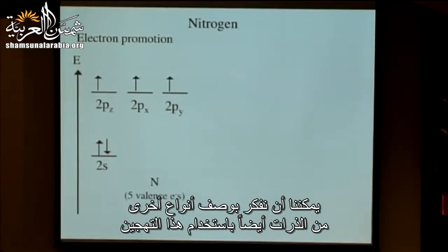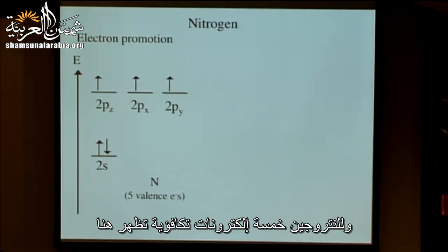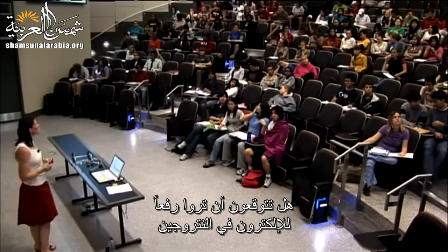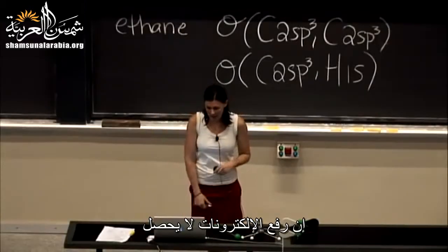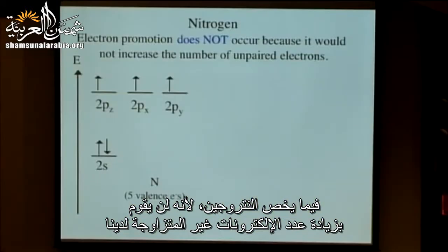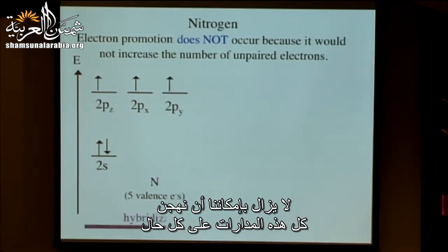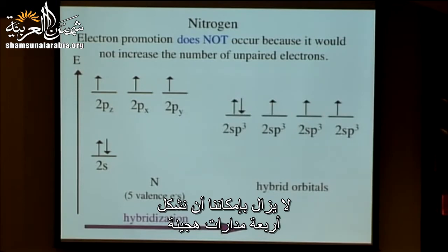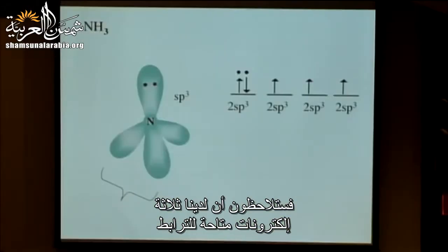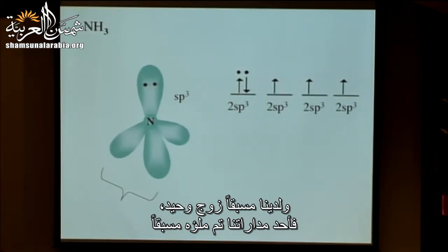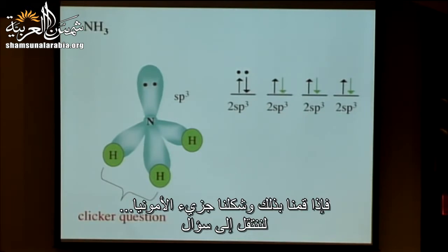We can also describe other atoms using hybridization. Nitrogen has five valence electrons. Would you expect electron promotion in nitrogen, pulling one 2s electron into a 2p orbital? No — electron promotion doesn't happen in nitrogen because it would not increase the number of unpaired electrons. No matter what we do, we'll always have three unpaired electrons. We can still hybridize all the orbitals, however, and form four sp3 hybrid orbitals. Two of those will be used for bonding; one already has a lone pair. So we can form the molecule ammonia by adding three hydrogen atoms.